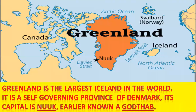Greenland is the largest island in the world. It is a self-governing province of Denmark. The Hindi meaning of province is Pranth. Its capital is Nuuk, earlier known as Godthåb.